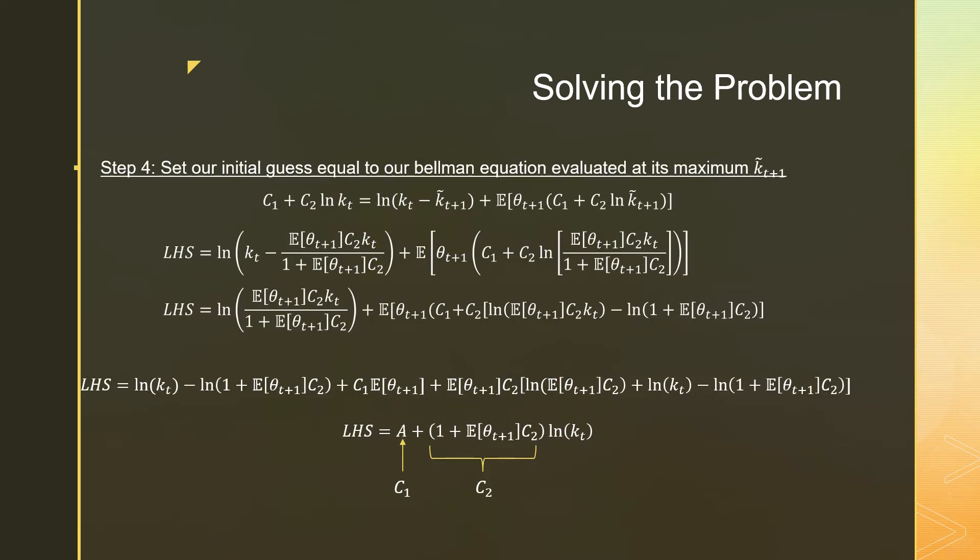So step number four is that we're going to set our initial guess equal to our Bellman evaluated at this maximum. This is an intermediate maximum, K_{t+1} tilde. I'm just working through this mathematics over here where you just plug it in and we work the algebra. Again, one of the things that you should see is how we're passing variables through this expectation operator when we have constant terms over here. The ones that are not impacted are those terms, and the ones that are remaining are these random terms.